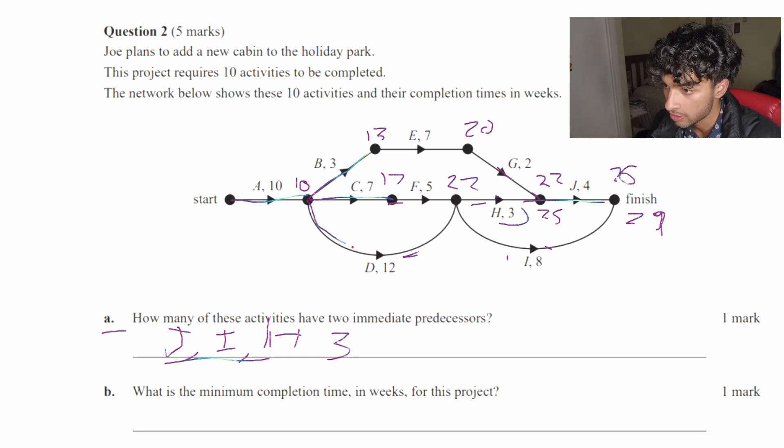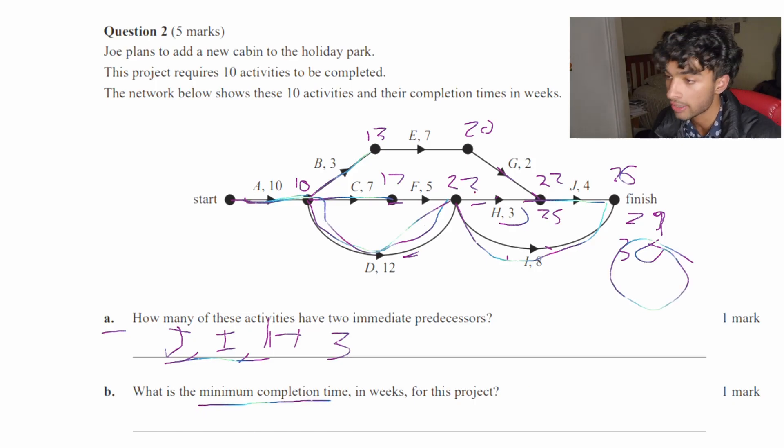And then this is actually the same path. So we can just skip straight to 22. And then if we go down here, it actually goes to 30. And that is all the available paths that we have. And since this is the longest, I know it says minimum completion time, but the thing is, you have to complete all the activities.